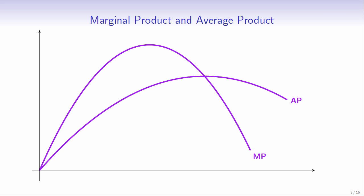Here are the graphs of marginal product and average product for a given production function. The horizontal axis measures the amount of labour. Adding more workers to fixed capital initially increases marginal product. Because marginal product is greater than average product, the extra productive marginal worker pulls up the average product of the team.